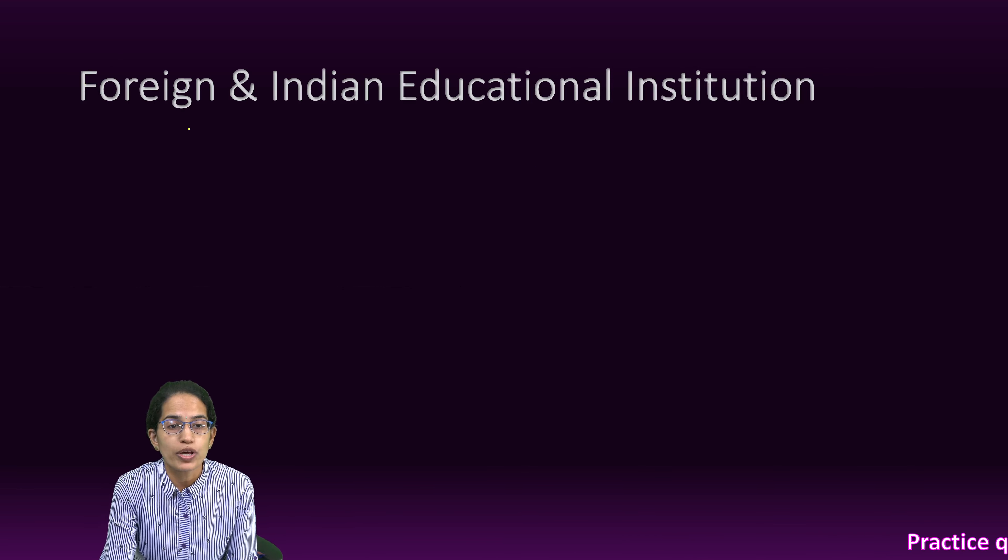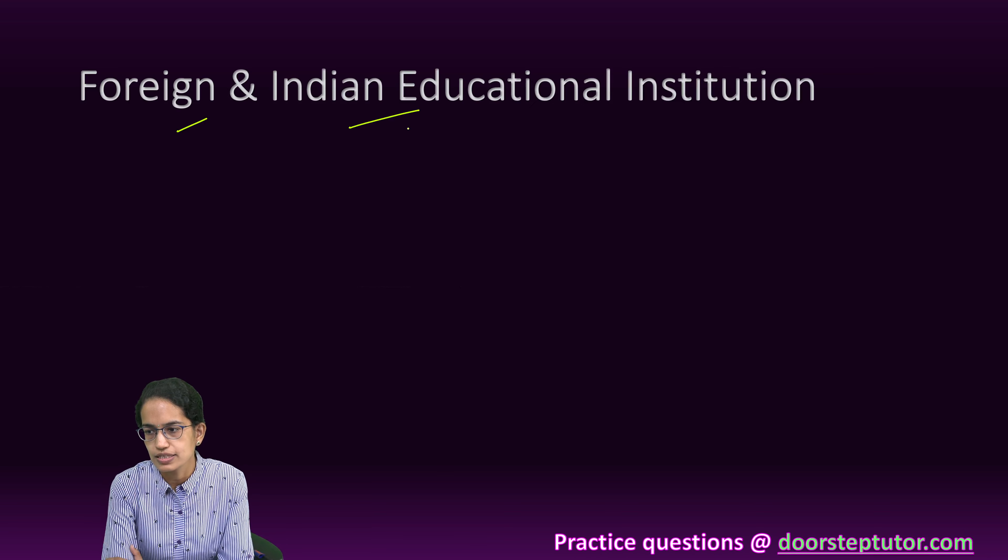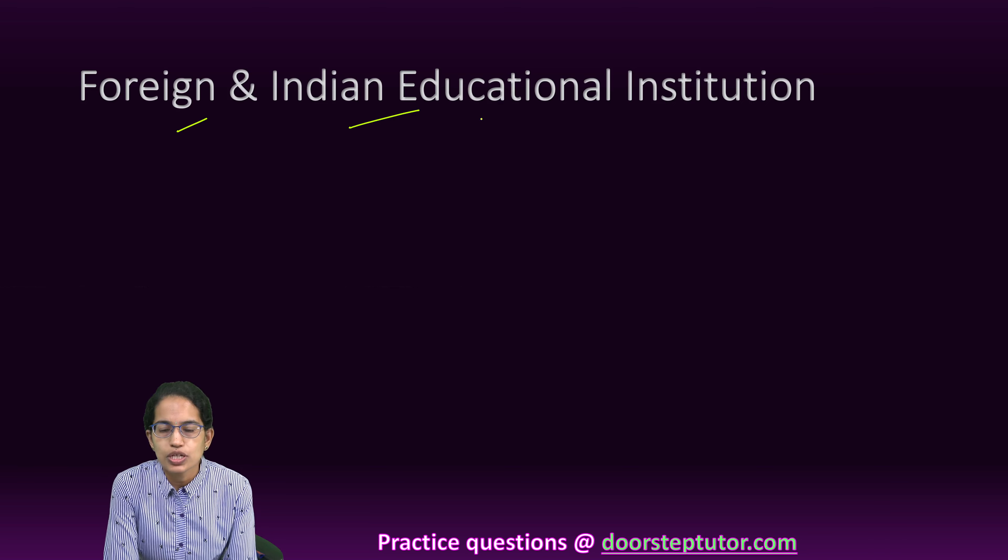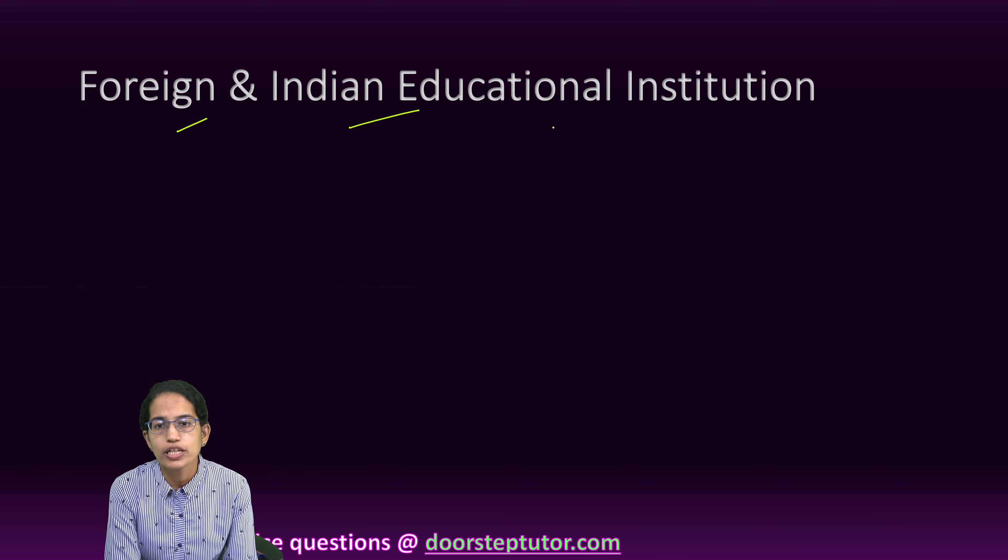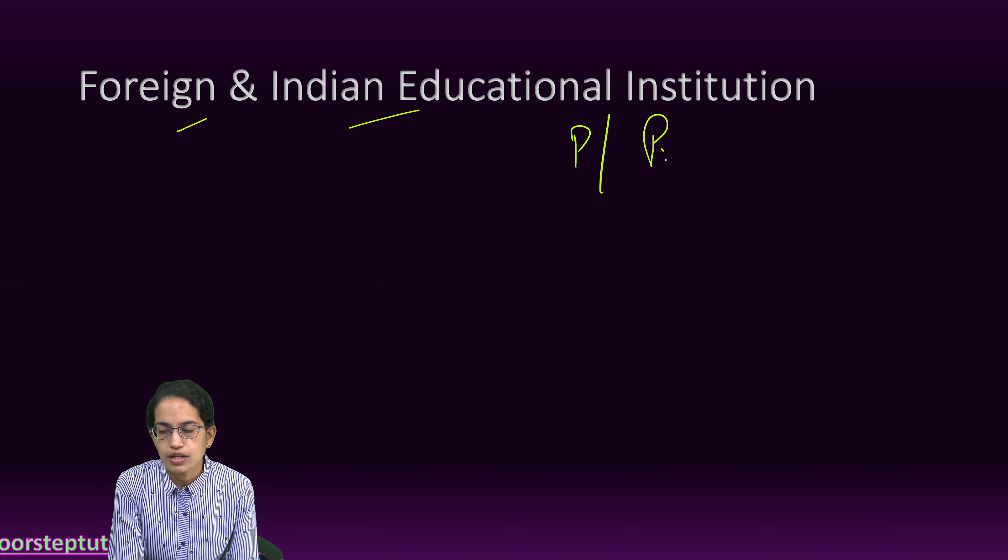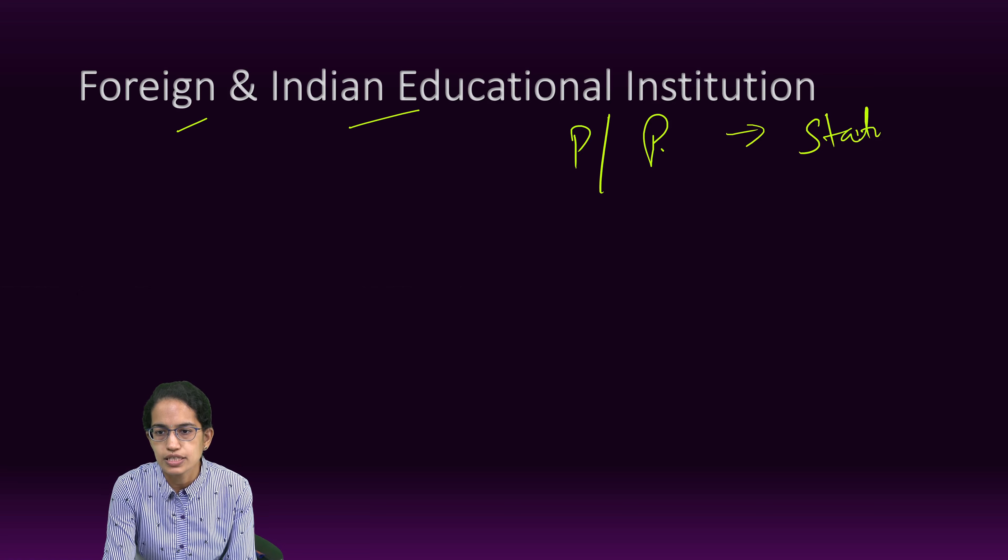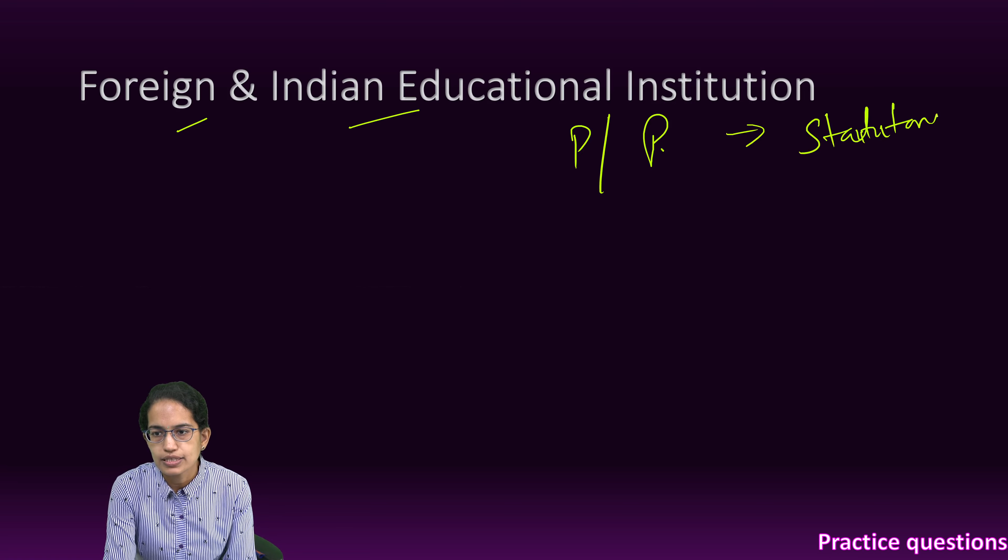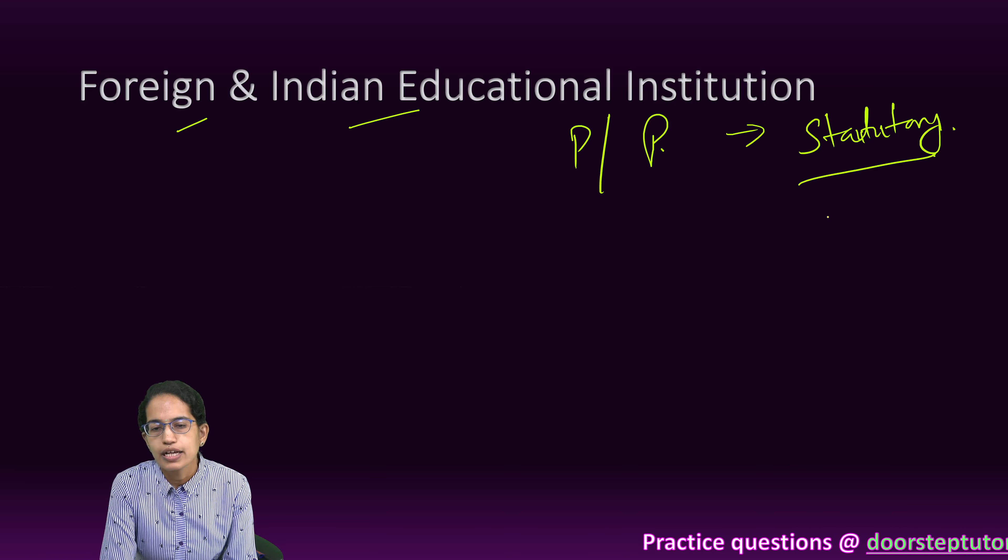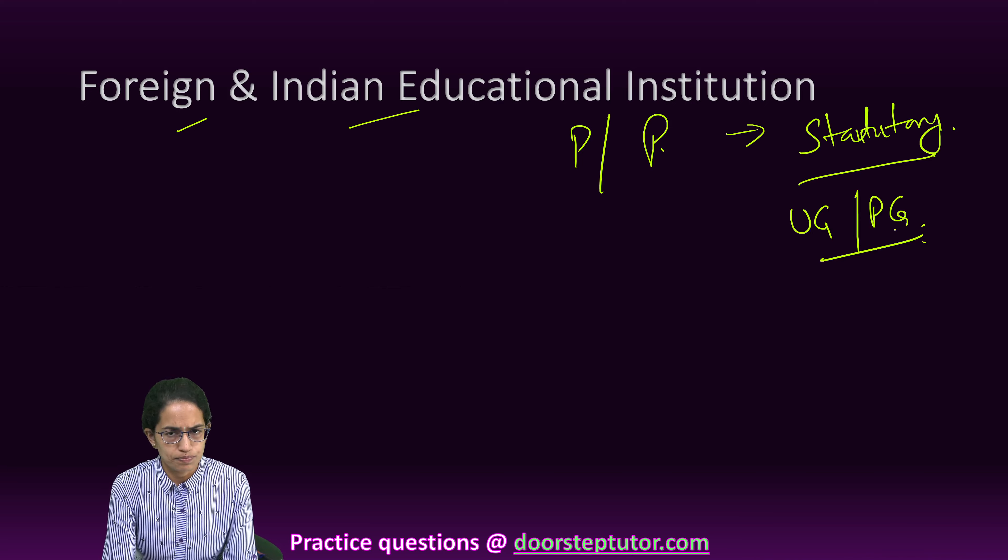Then next is what is foreign educational institutions and Indian educational institutions? How do we classify those? So, Indian educational institution is any college, institution, university which is either under public sector or under private sector and is recognized by a relevant statutory body. So, it is actually recognized by a statutory body and offers UG courses, PG courses or postdoc courses.